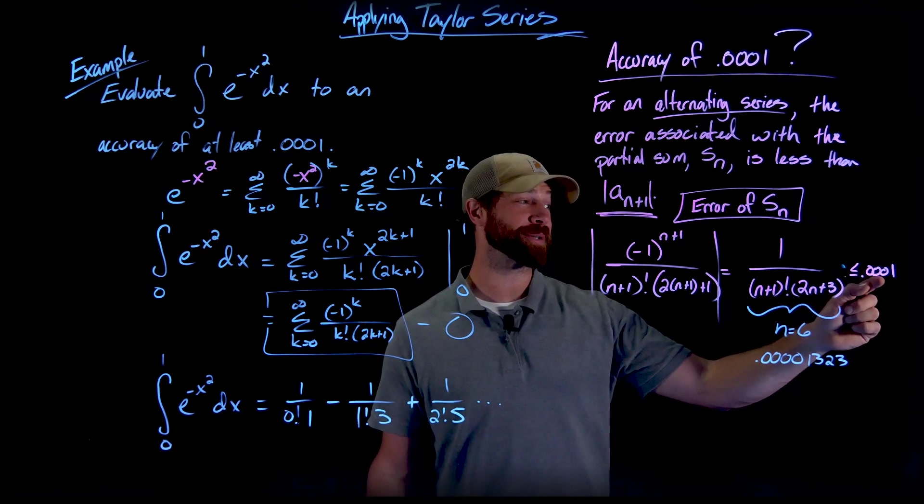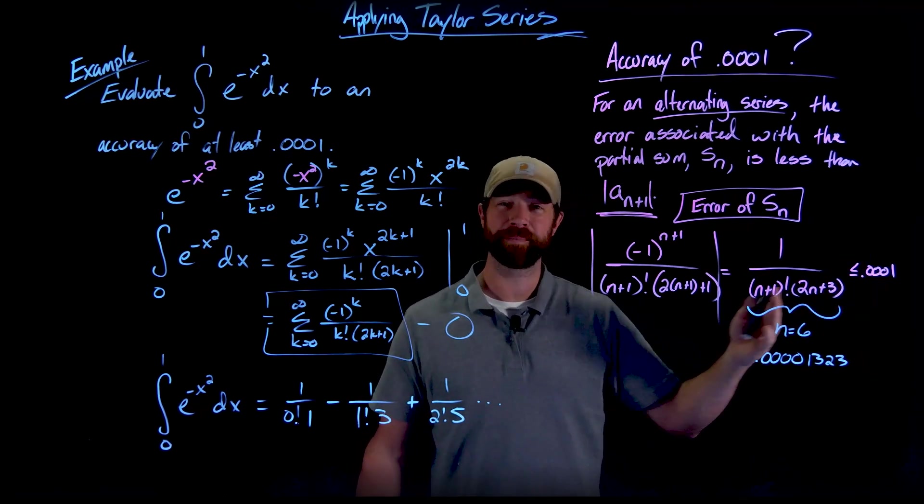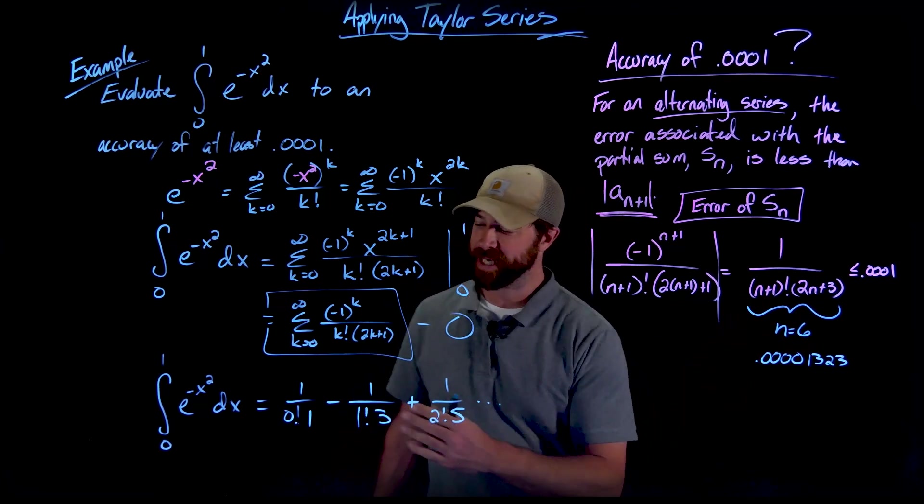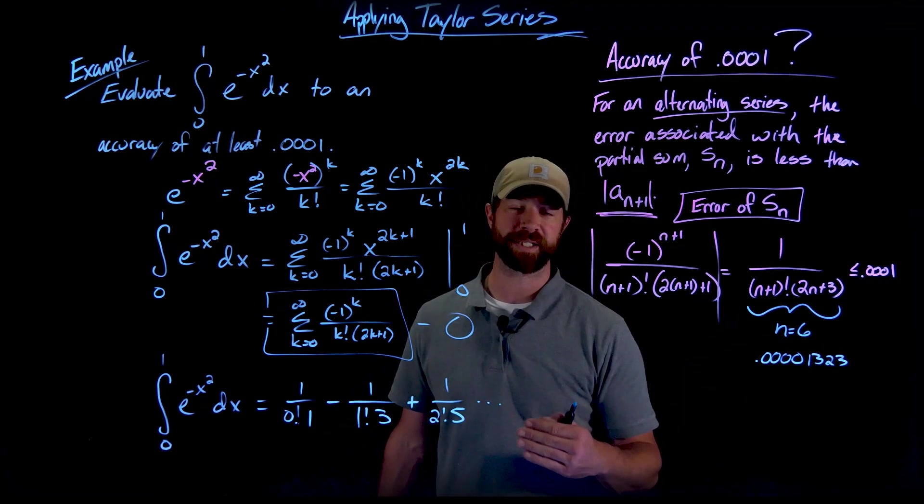And to be honest, n equals 5 was really close. It was 0.0001 something, but just above 0.0001, I had to go to n equals 6. So that means I need to calculate the first six terms.